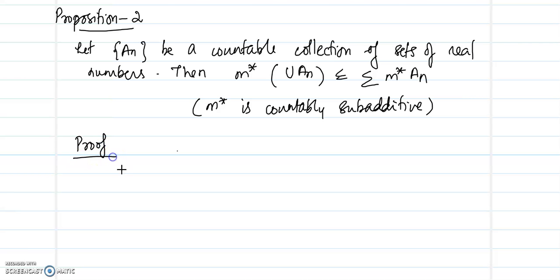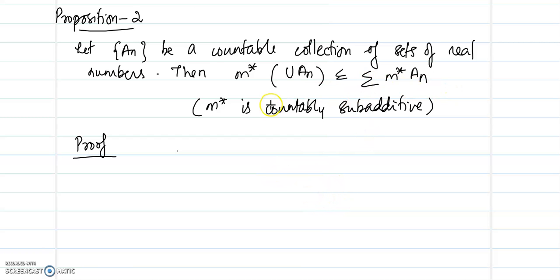So, let us prove this result. Now, if one of the Aₙ's has infinite outer measure, then the inequality will hold trivially. So, M*(Aₙ) equals infinity and again M* of the union of Aₙ will always be less than or equal to infinity. So, the result will hold in this case.